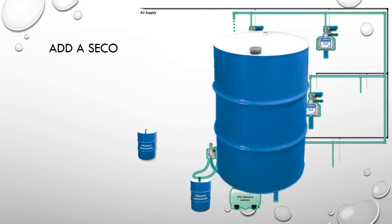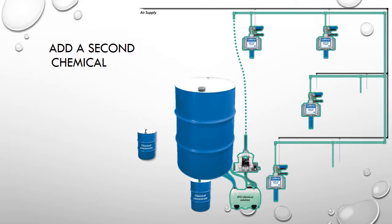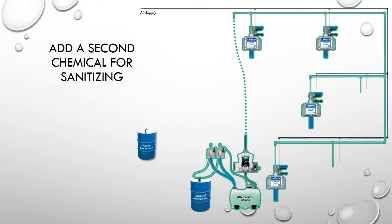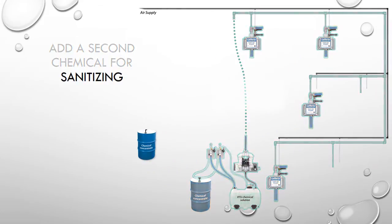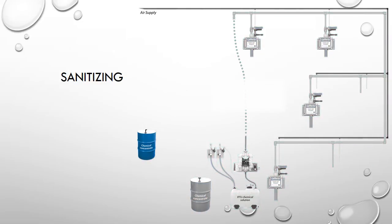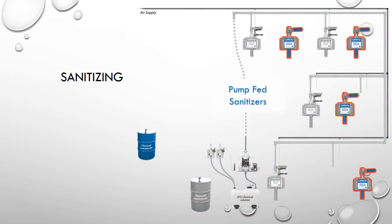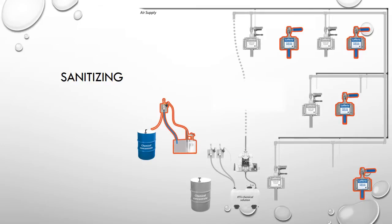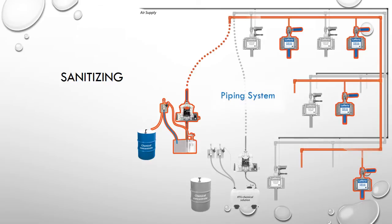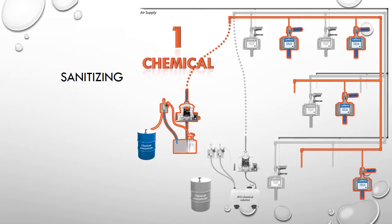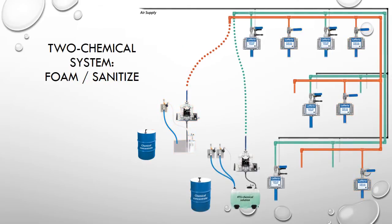When a central system for foam cleaning is planned, often a second central system is used to apply a sanitizing chemical. The sanitizing system will have its own applicators, dilution system, pump system, and piping system. Each system is for one chemical.